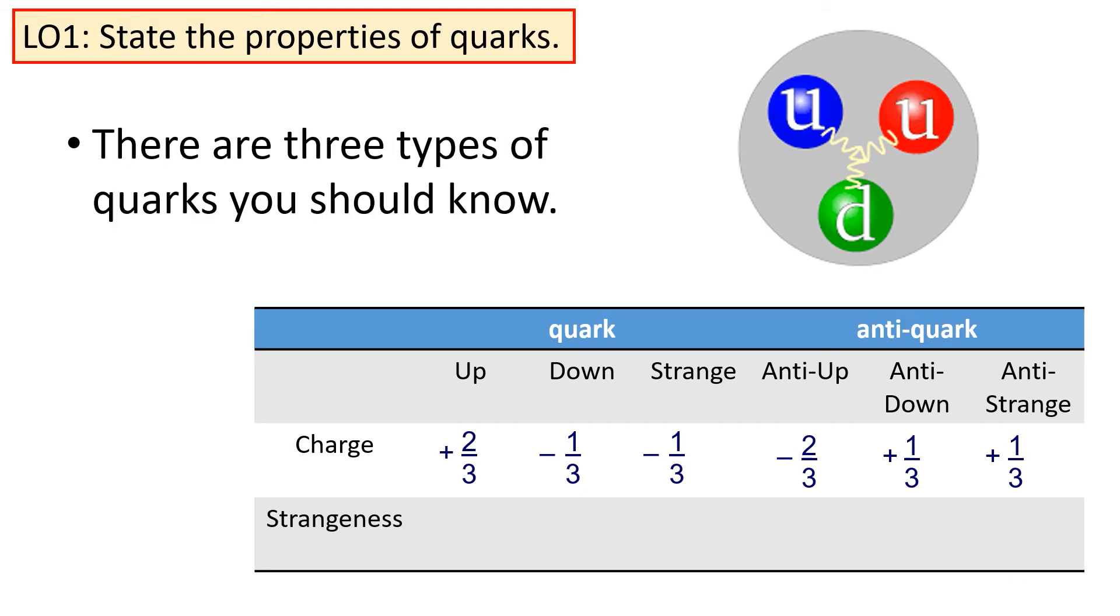The one type of quark we haven't met yet is the strange quark. The strange quark is defined as having an extra quantum number called strangeness. The strange quark has a strangeness of minus one, and the anti-strange quark has a strangeness of plus one.